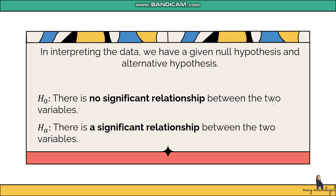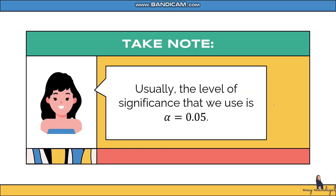We will now consider the hypotheses and write conclusions based on the relationship of the variables. For your null hypothesis, you write: there is no significant relationship between the two variables. For the alternative hypothesis: there is a significant relationship between the two variables. This is how we write our hypotheses.